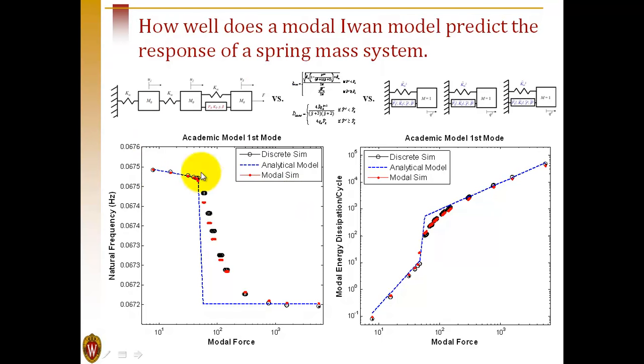This slide summarizes how well this works for the first mode. The black circles are the response of the truth model, the 3 degree of freedom system, modal filtered to only include the first mode. The red circles are the modal response of a 1 degree of freedom system whose parameters are tuned to best match the response of this mode.